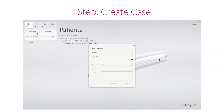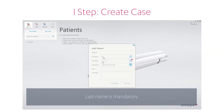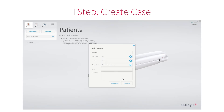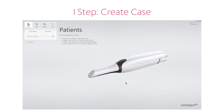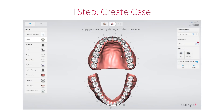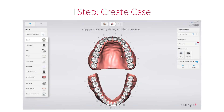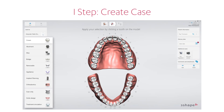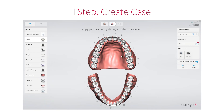The first step is to create the case you want to scan for. You start with setting the patient's personal data. Once the patient has been added, you'll then choose the lab or manufacturer with which you wish to work. After choosing the lab, you will enter the order page, where you will select the tooth or teeth on which treatment is planned.